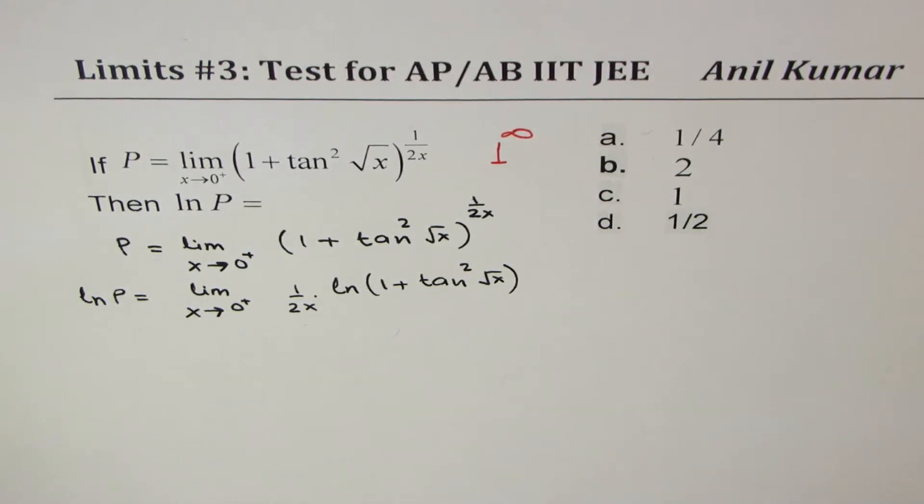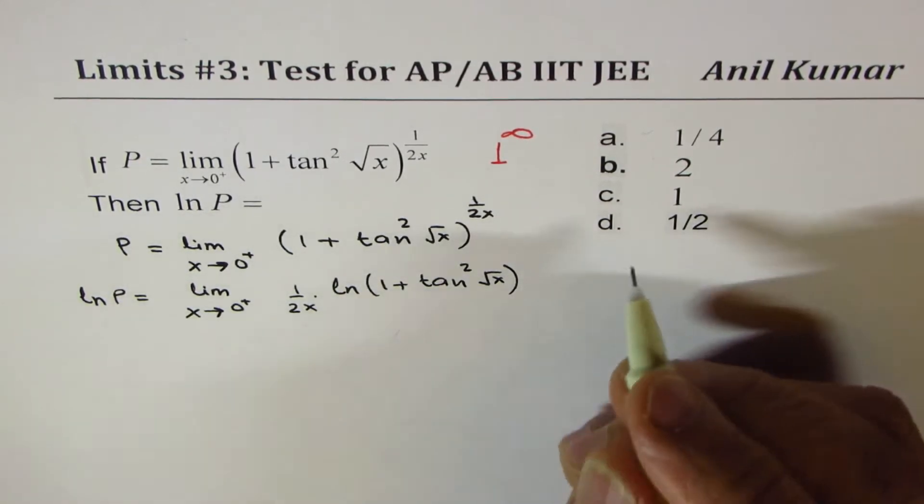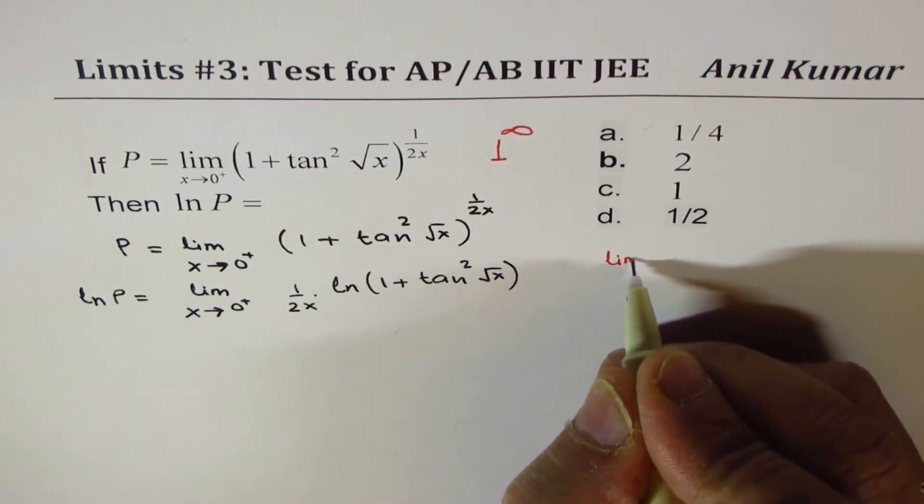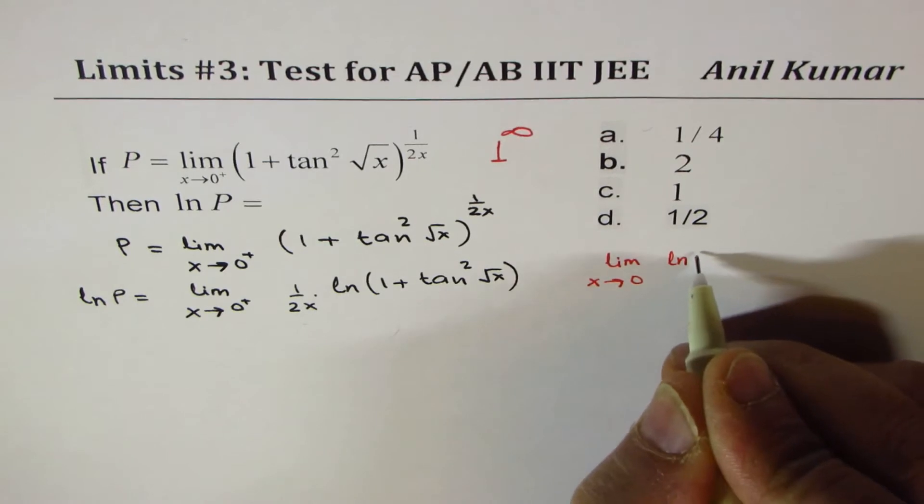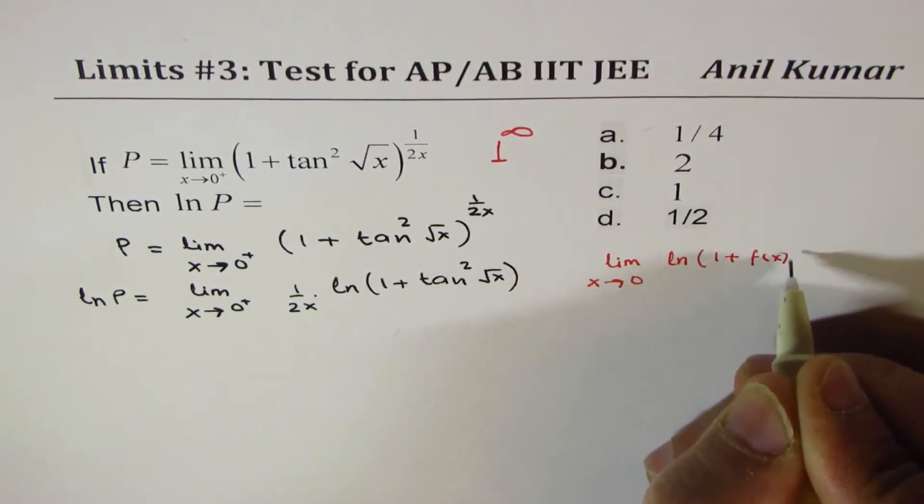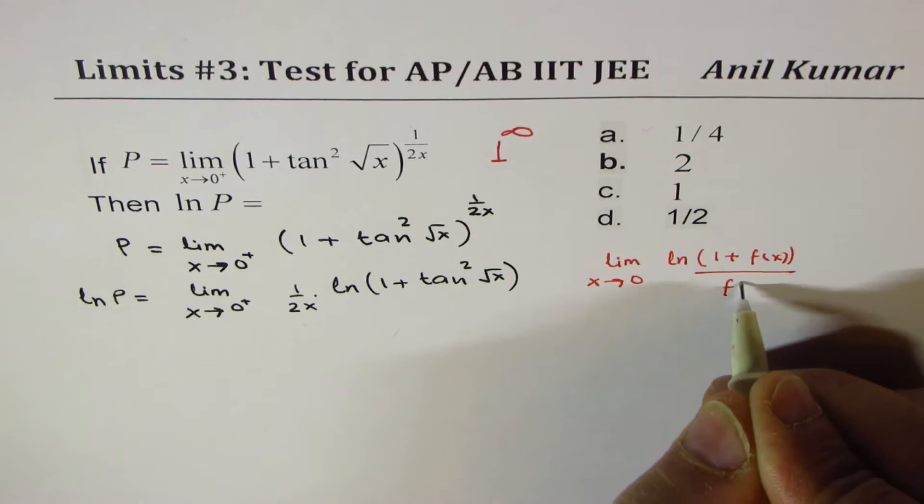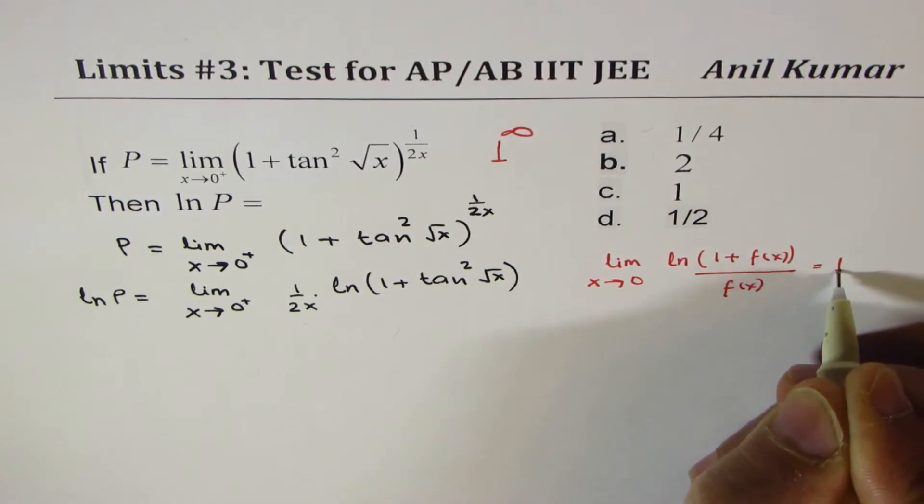Now I hope you remember the formula, which is limit x approaches 0 for ln(1 + f(x))/f(x). This is equal to 1.